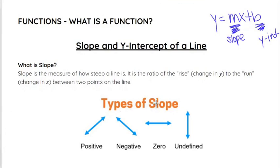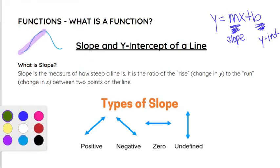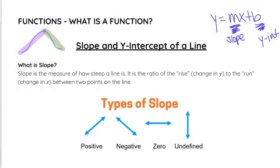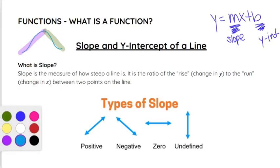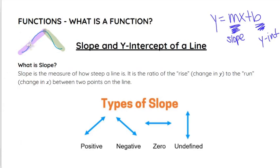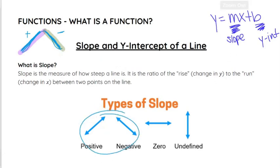Slope is a measure of how steep the line is. If you think about a hill and just focus on one portion of it as a linear piece and not curved, that can help us understand what slope is. A positive slope is going to be going up from left to right, like this portion of my hill. A negative slope is going to be going down from left to right, like this portion of my hill.